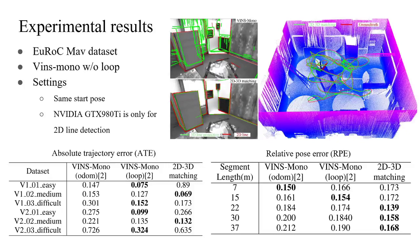Regarding the relative pose error, the accumulated drift of the VO model increases with travel length, while the localization error of our method stays very small and stable along the way.